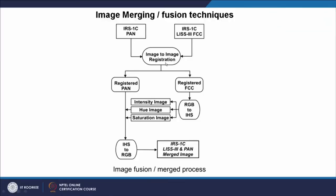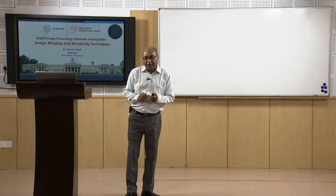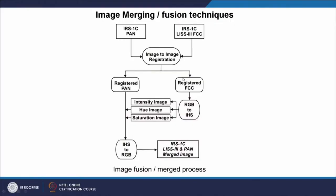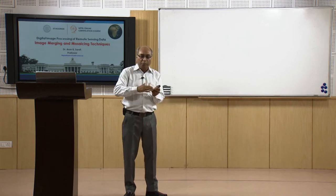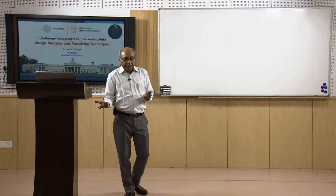We exploit the characteristics of the color cone to create fused images. Taking the example of IRS 1C PAN with 5.8 meter resolution and IRS LISS-3 with 23.5 meter resolution, the first step is image-to-image registration so that the images fit or stack together very nicely. The registered PAN is kept on one side, while the registered FCC is split from the RGB domain to the IHS domain — that is, the Intensity, Hue, and Saturation domain — because in color space you can transform from the RGB plane to the IHS plane.